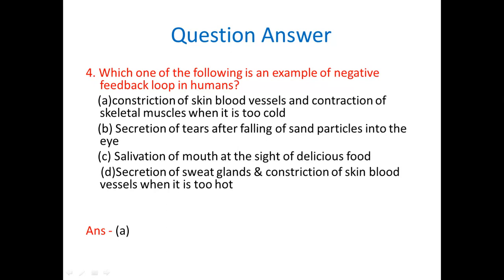Which one of the following is an example of negative feedback loop in humans? Constriction of skin blood vessels and contraction of skeletal muscles when it is too cold. Secretion of tears after falling of sand particles into the eye. Salivation of mouth at the sight of delicious food. Secretion of sweat glands and constriction of skin blood vessels when it is too hot. So correct option is constriction of skin blood vessels and contraction of skeletal muscles when it is too cold.